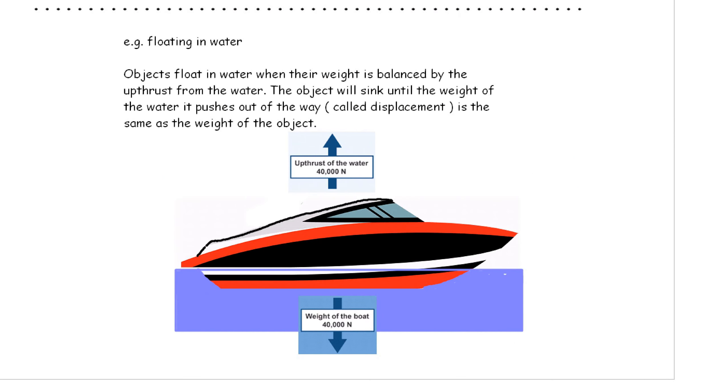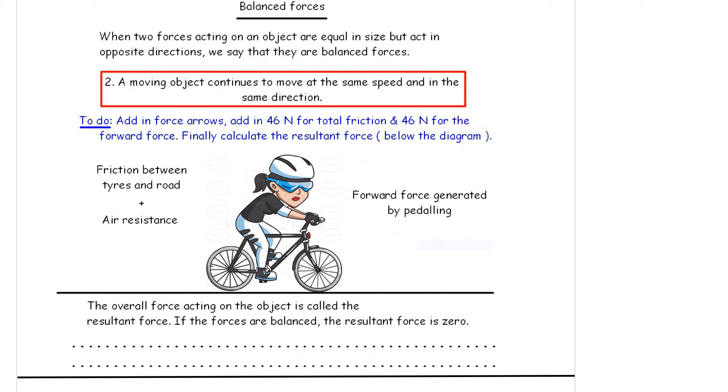Have a read through this example of floating on water. Once again, the forces are going to be equal but opposite. They're going to be balanced. We have seen in balanced forces, when two forces acting in an object are equal in size, but in opposite directions, we say that they're balanced.